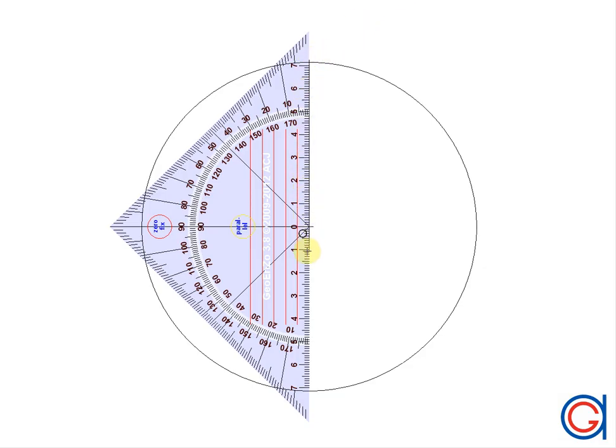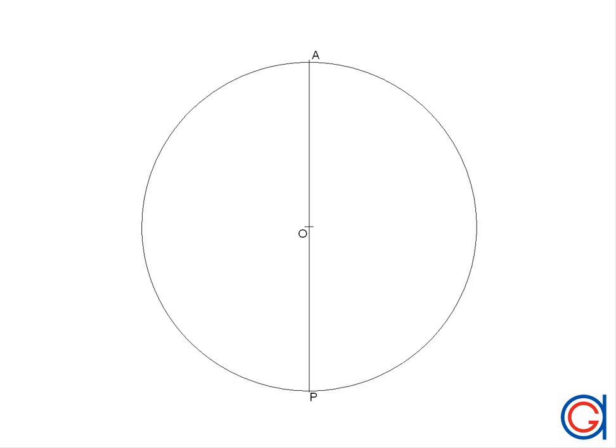The first step is to draw a vertical diameter which cuts our circumference at points A and P, as shown here in the video.